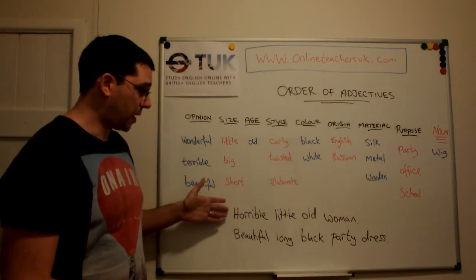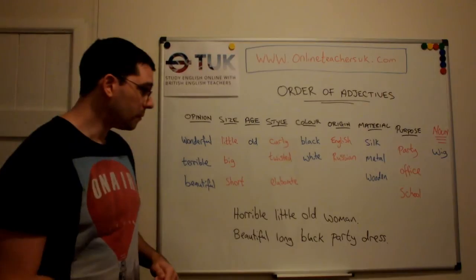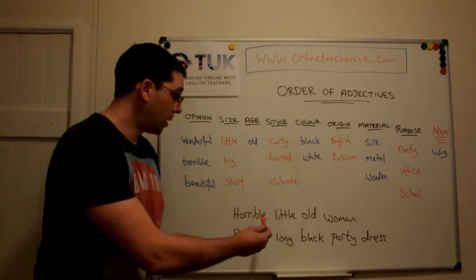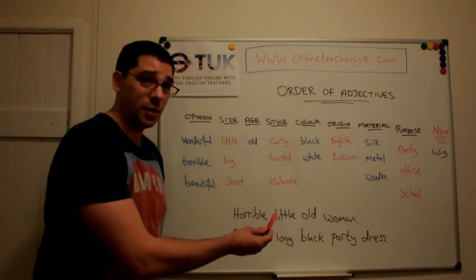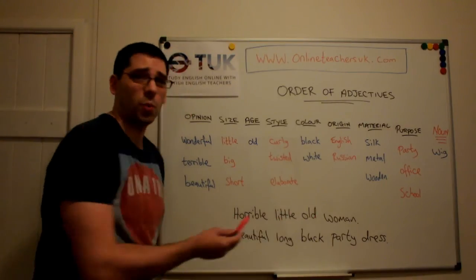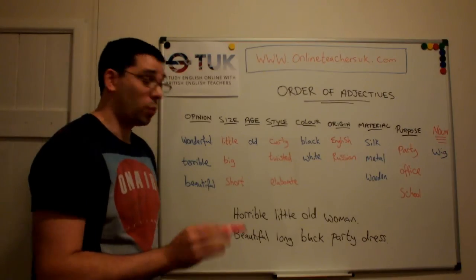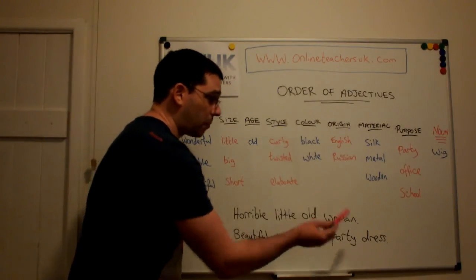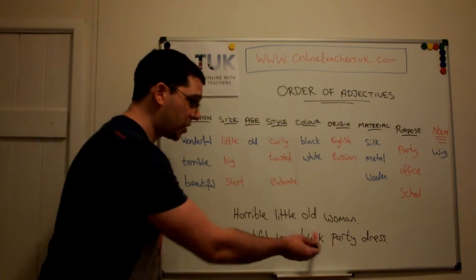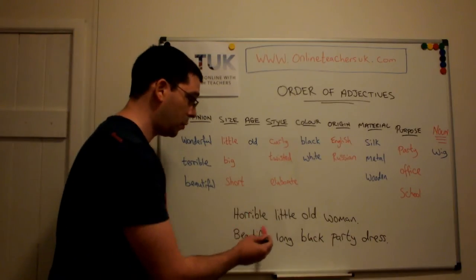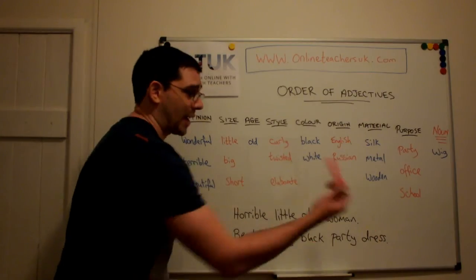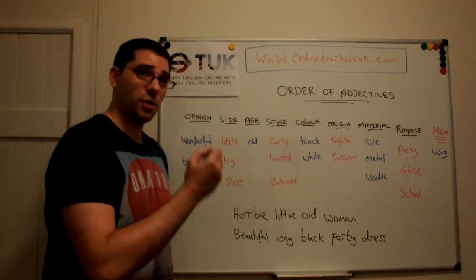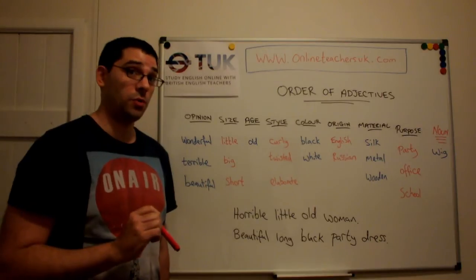So if you take this example here: horrible little old woman — we couldn't really move these adjectives around. We don't have a lot of freedom. So when we say 'horrible little old woman', if we said 'little old horrible woman', that would sound quite unnatural in English. That wouldn't be something that a native speaker would say. Or 'beautiful long black party dress' — equally we wouldn't change the order of these adjectives, so we couldn't have 'a beautiful party long black dress'. That would sound very strange. So there is a certain sequence, a certain order of adjectives that you should remember when you're using the language.